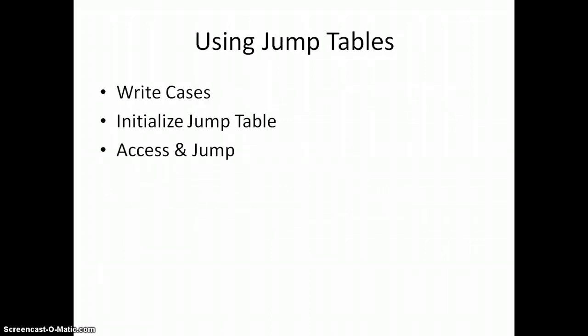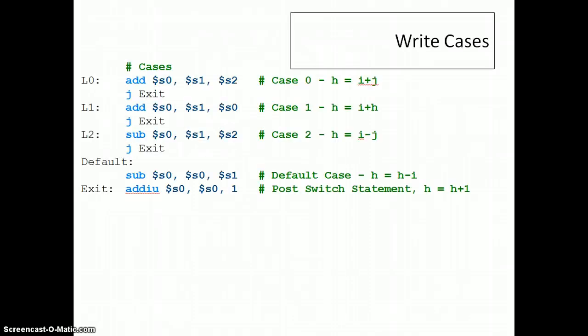When using jump tables, you want to do things in this sequence. First I like to write the cases - remember we're supporting a switch case structure. Then I want to initialize the jump table. When I write the cases, it'll tell me where my labels are and what they are, and then I can use that to initialize the jump table. Then I want to write the access and jump block, which is basically going to be the same every time.